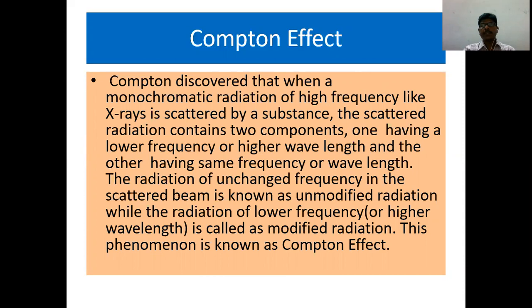This slide gives us the summary and the definition of what is Compton effect. Compton discovered that when a monochromatic radiation of high frequency like x-rays is scattered by a substance, the scattered radiation contains two components: one having a lower frequency or higher wavelength and the other having same frequency or wavelength.